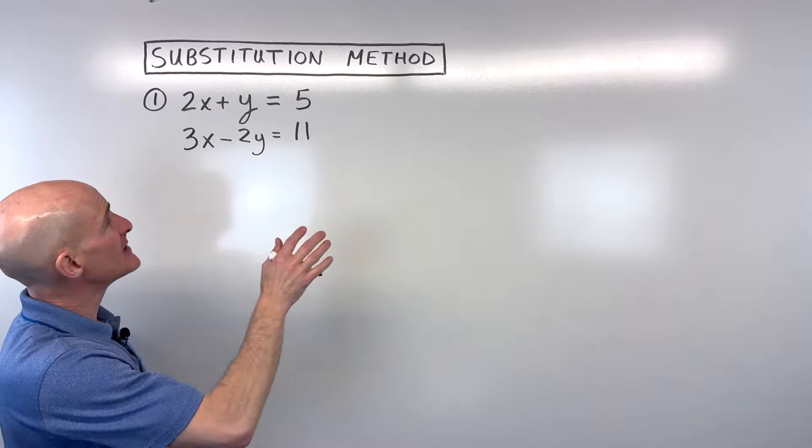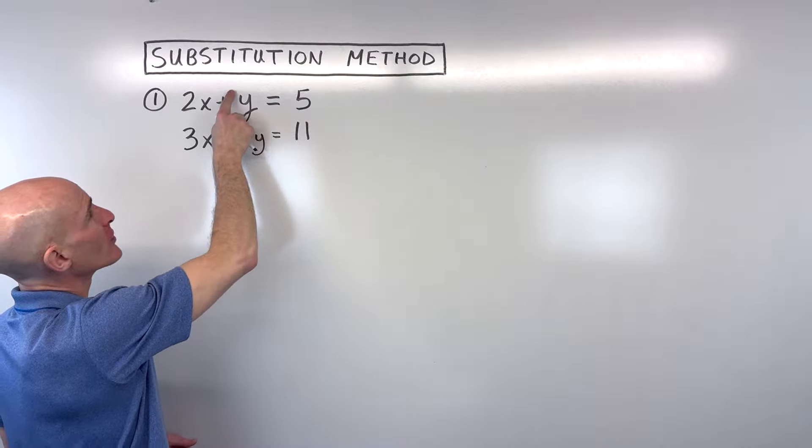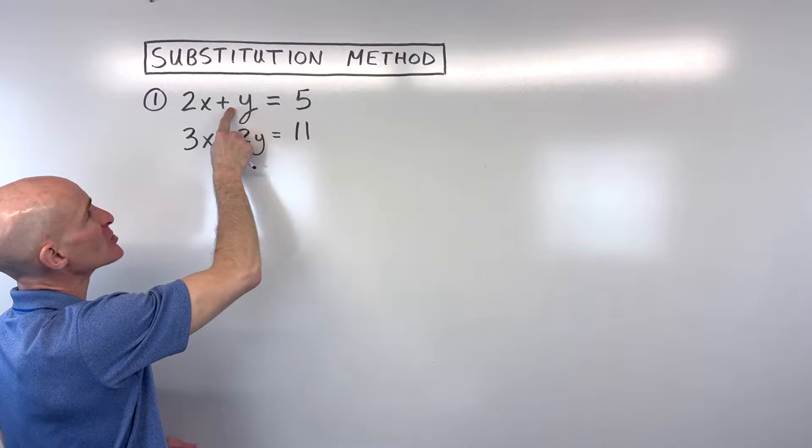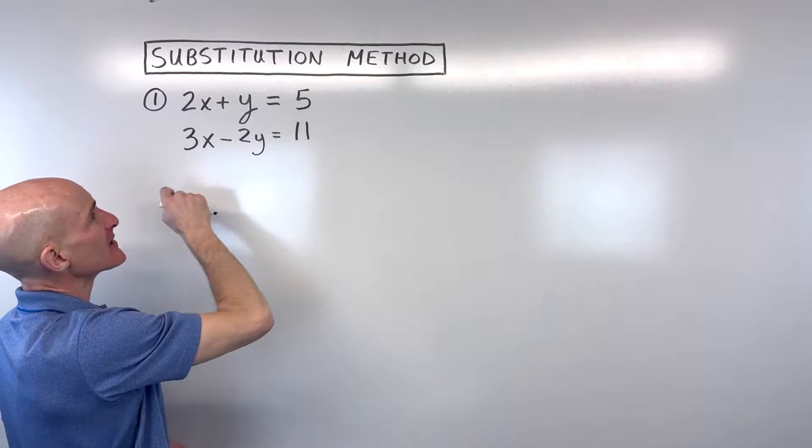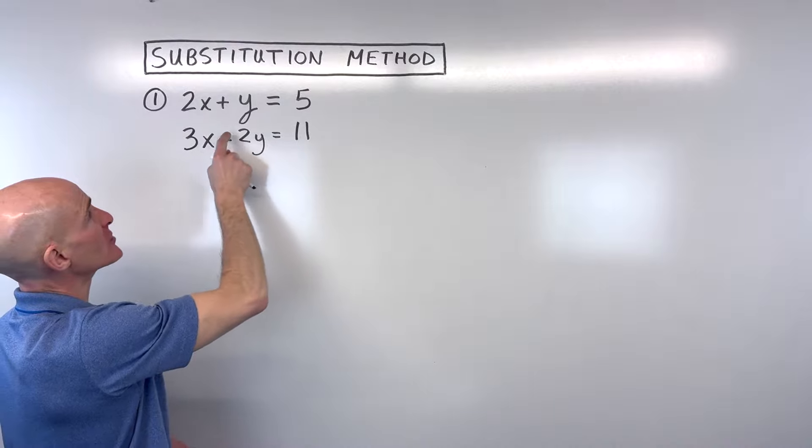So if you want to make it easier on yourself, look for a variable where the coefficient in front of that variable is just a one. So this y here is like one y. So I would try to isolate this variable as opposed to this one or this one or this one.